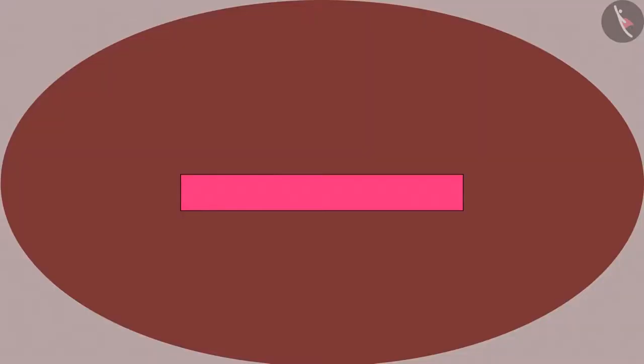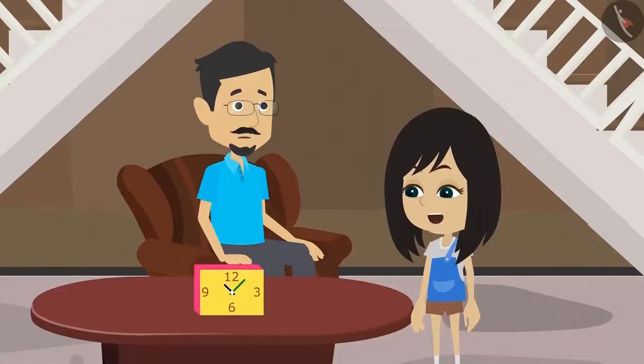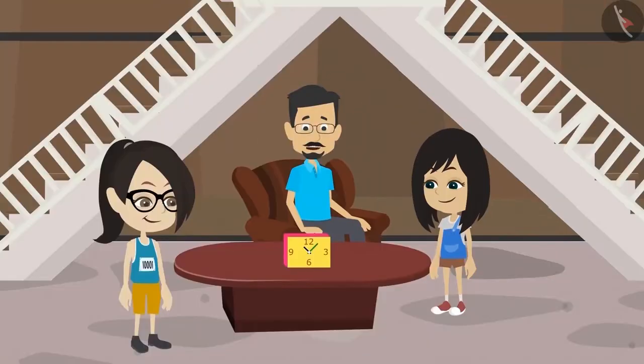Because of these three dimensions, an object appears to have different shapes when viewed from different sides. For example, when you look from the top the clock looked like a rectangle, but when you saw from the front you could see a clock. Now I have understood a little. Let me explain this to you with another example.